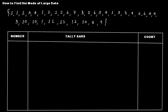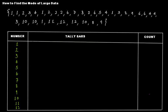Start from one — we don't have zeros here — so start from one, then we have two, then three, then four. Do we have five? Yes. Do we have six? Yes. Do we have seven? Yes. We have eight, nine, ten, eleven, and twelve.